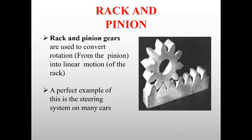The next is rack and pinion. The rail-like structure is termed as a rack, and a pinion is rolled over it. Rack and pinion gears are used to convert rotation into linear motion. A perfect example of this is the steering system on many cars.